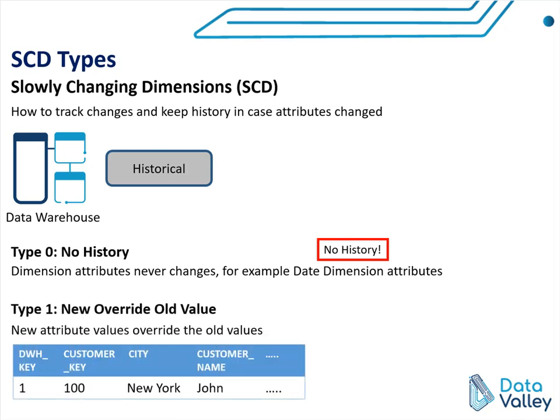In Type 1, we overwrite the old value with the new value. For example, in this table we have customer information. We have a data warehouse key, which is a surrogate key; a customer key, which is the durable or source system key; and we have city and customer name for this customer. This is what we need to demonstrate Type 1.